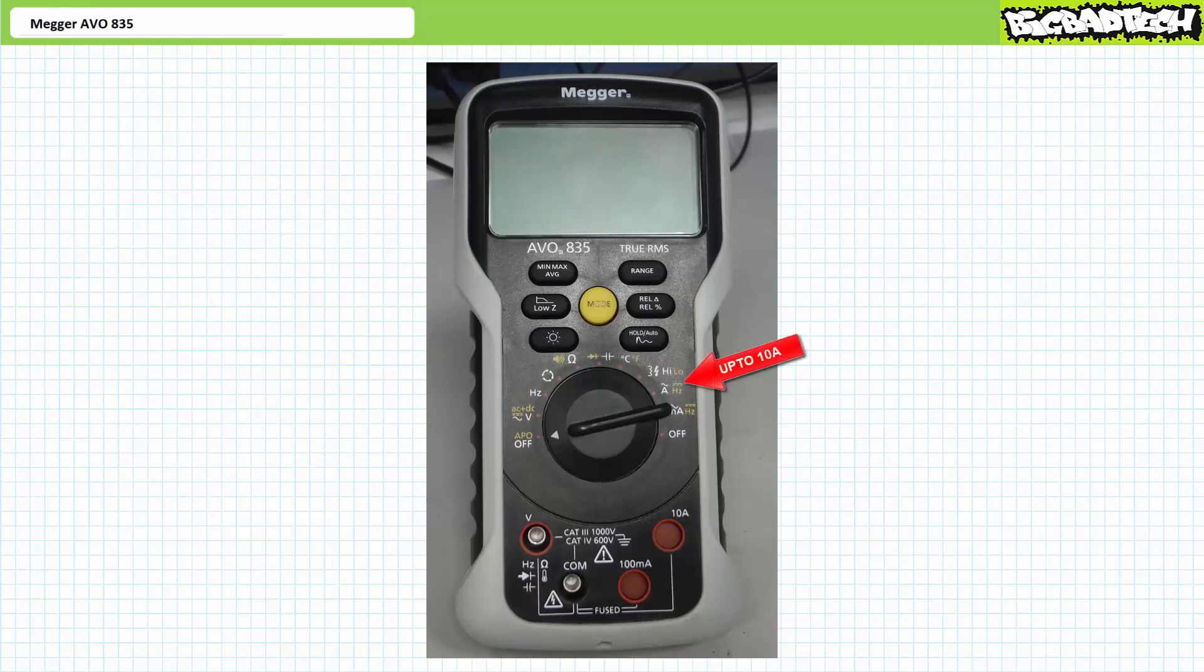To select the appropriate range, turn the selector switch to either the amp selection for measurements less than 10 amps, or the milliamp selection for measurements less than 100 milliamps. The up to 10 amp range uses this terminal as the input and the common as the output. Similarly, the up to 100 milliamp range uses this terminal as the input and the common as the output.